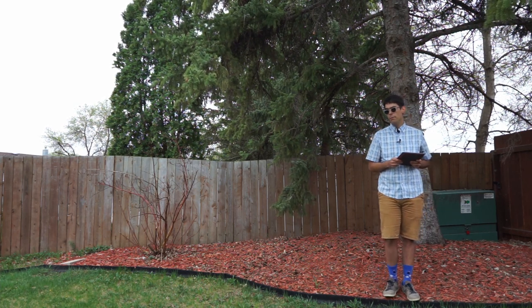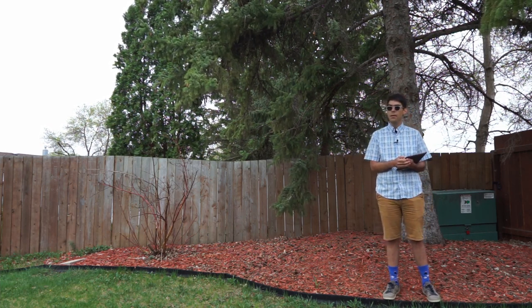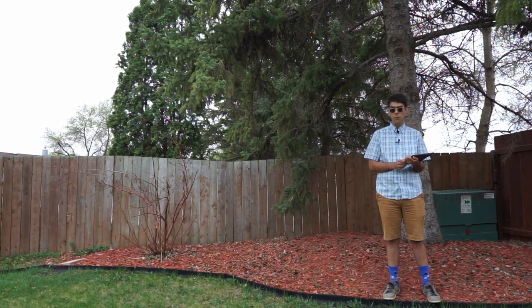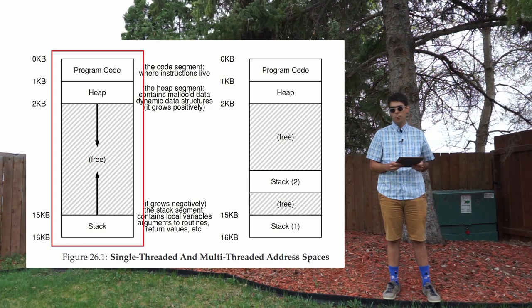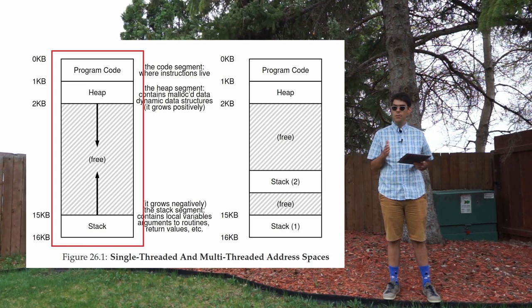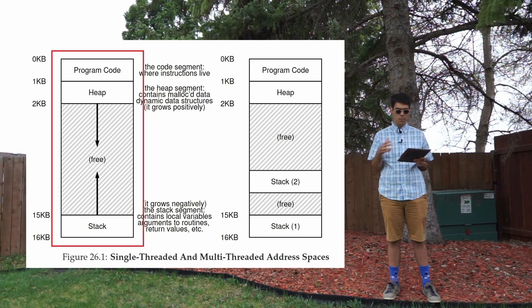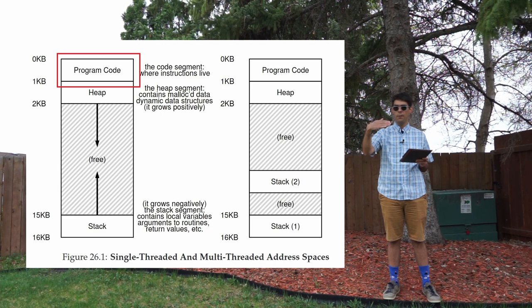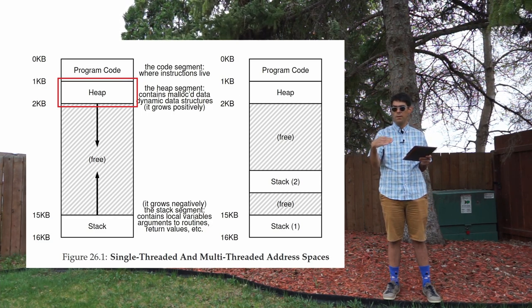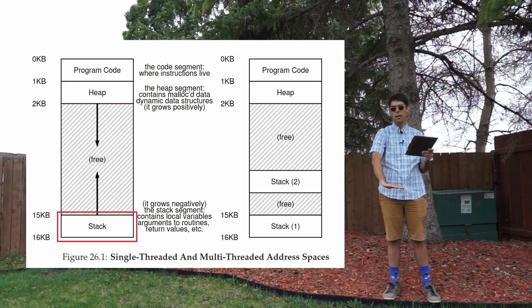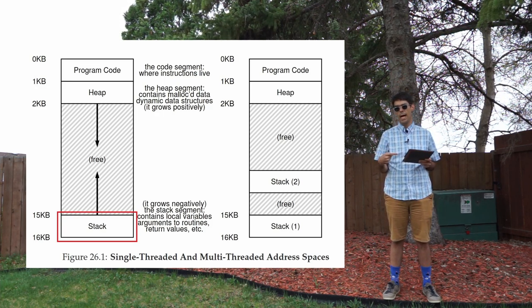We haven't really talked about virtual addresses or virtual address spaces yet, so let me quickly step through figure 26.1. On the left side is a single-threaded process. It has things we probably recognize: program code at the lowest addresses of memory, then the heap representing dynamically allocated memory, and at the very bottom the stack which grows upward as we call functions and push stack frames onto it.